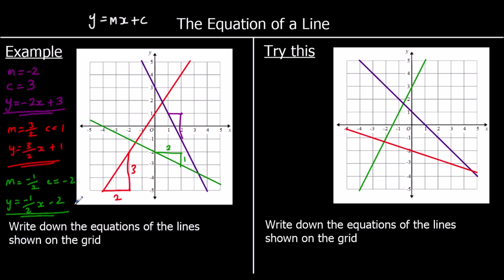Three for you to work out, so give them a go. Starting with the green line: for every one it goes across, it goes up two — a gradient of two. It crosses the y-axis at three. So it's y equals two x plus three.